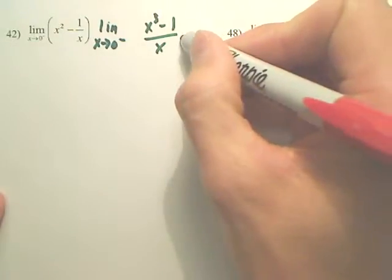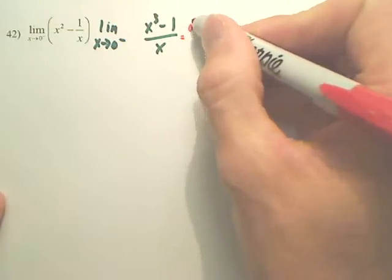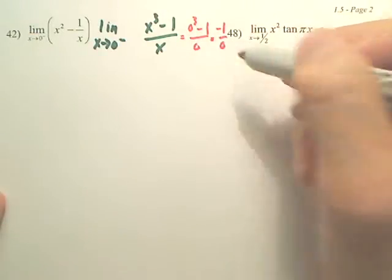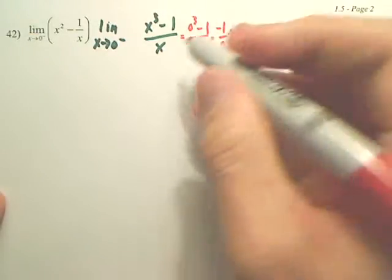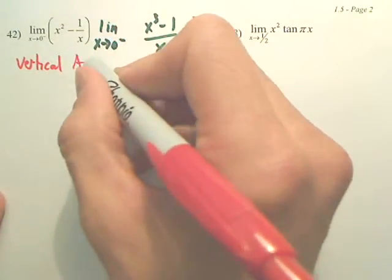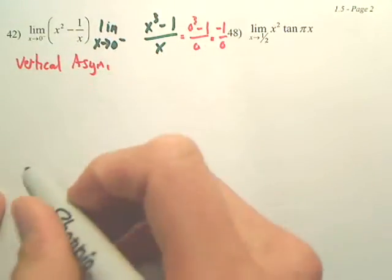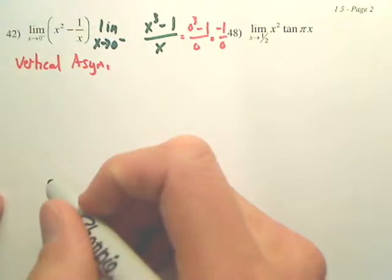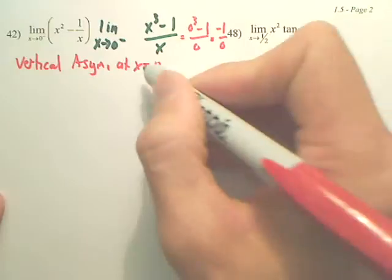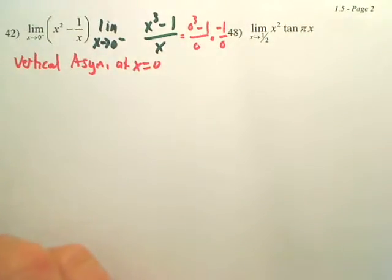So again, we know when we plug in zero, you get negative one over zero, which means it's a vertical asymptote. So we know it's a vertical asymptote at x equals zero. We just want to see from the negative side, is my limit negative or positive?